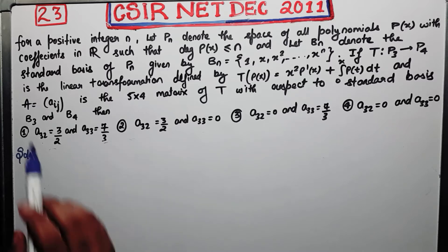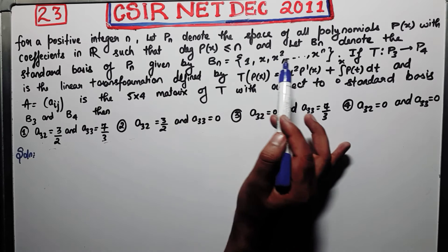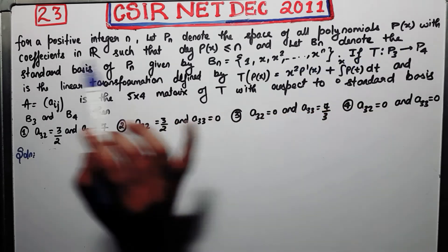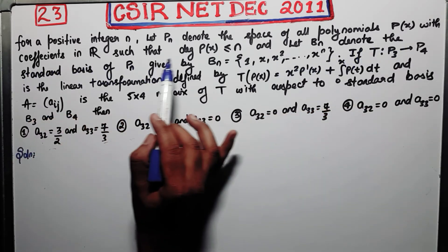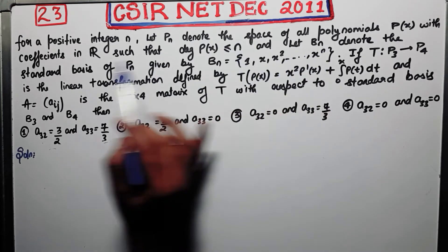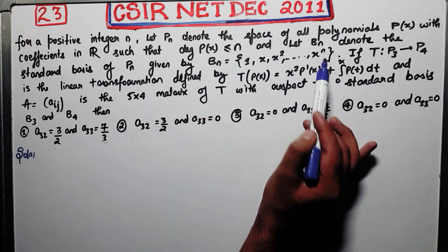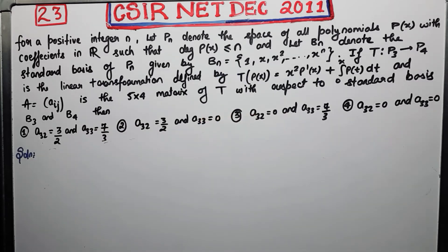So it says for a positive integer n, let P_n denote the space of all polynomials p(x) with coefficients in R such that degree of p(x) is less than or equal to n, and let B_n denote the standard basis of P_n given by B_n equals this. This is your basis for P_n.